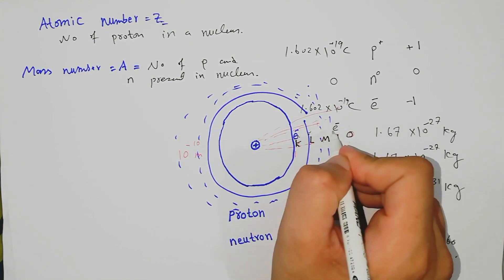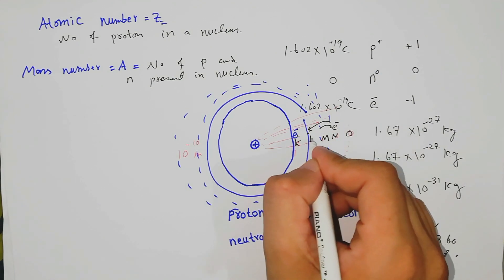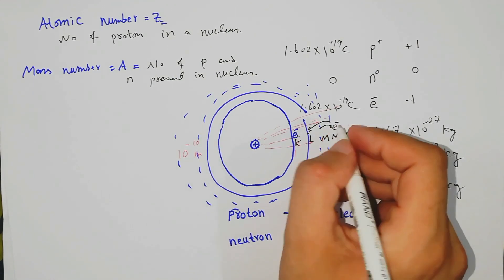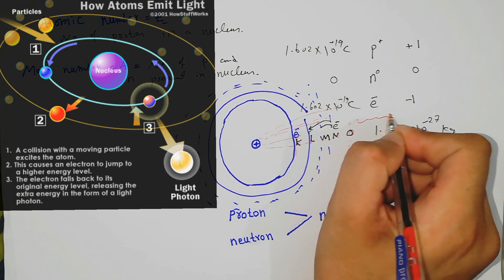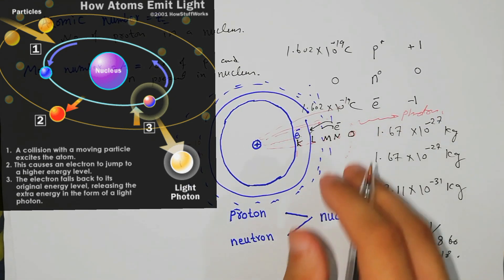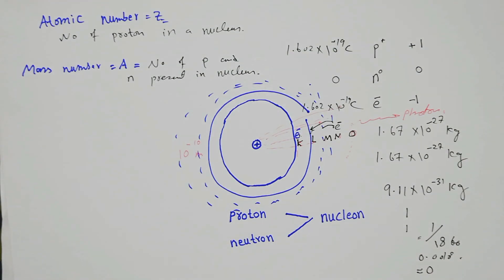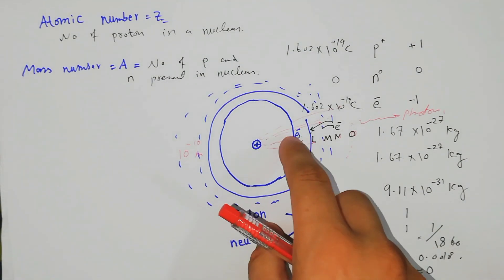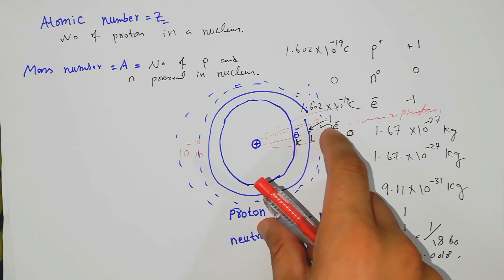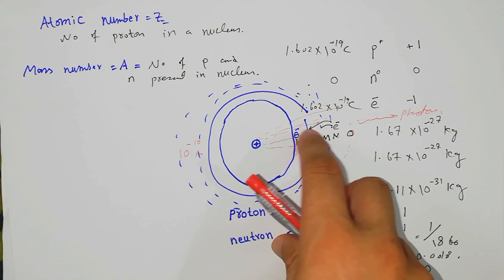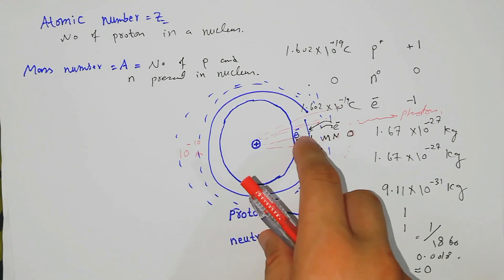If an electron is on the N shell and wants to jump to M or L shell, the energy of M and L shells is less compared to N. In this case, the electron releases energy in the form of a photon. This process is called the transition of electrons. Excitation occurs when electrons move from a low energy level to a high energy level — for example, from K to L, M, N, or O — and in this case the electron needs to absorb energy.